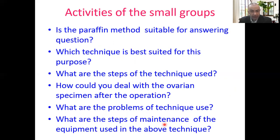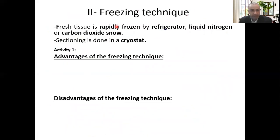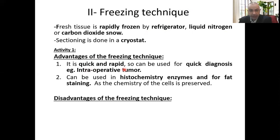What are the steps of maintenance of equipment used? The freezing technique: fresh tissue is rapidly frozen by refrigerator, liquid nitrogen, or carbon dioxide snow. Sectioning is done by the cryostat. The advantage of the freezing technique is that it is quick and rapid, so it can be used for quick intraoperative tumor diagnosis. It can also be used in histochemistry for enzymes, fat staining, and the chemistry of the cells is preserved.